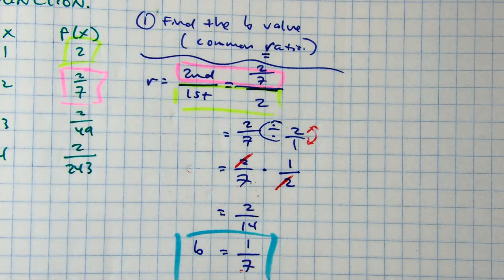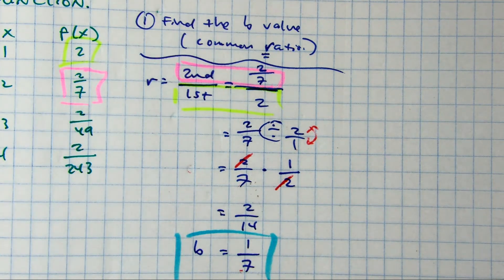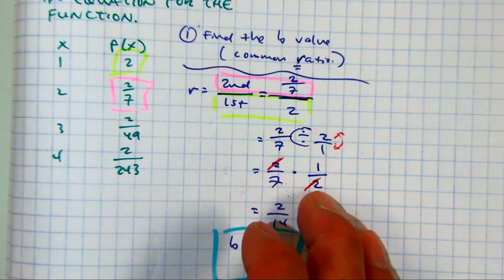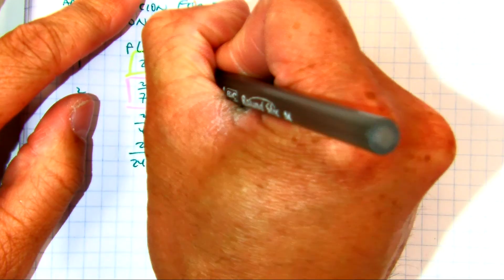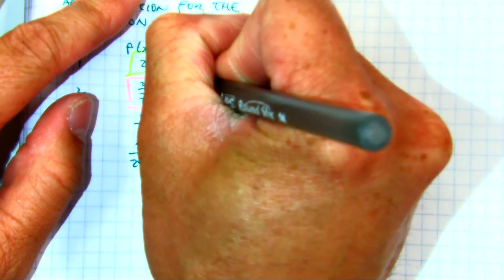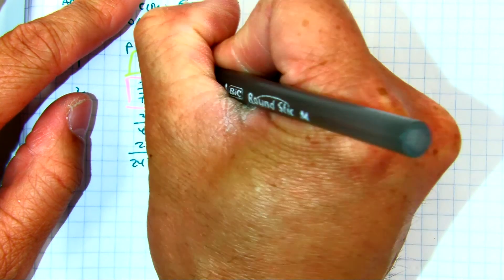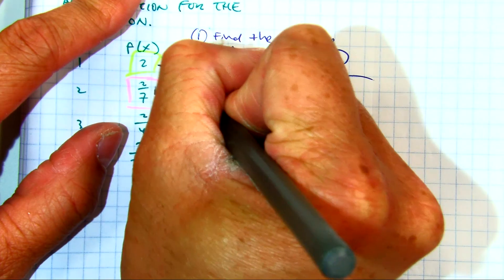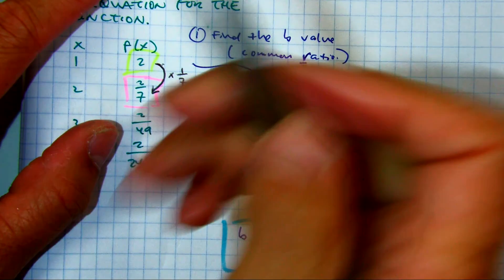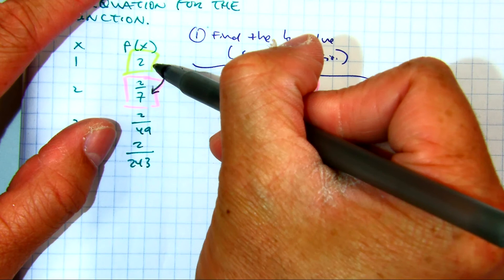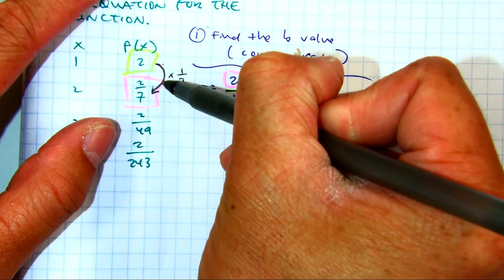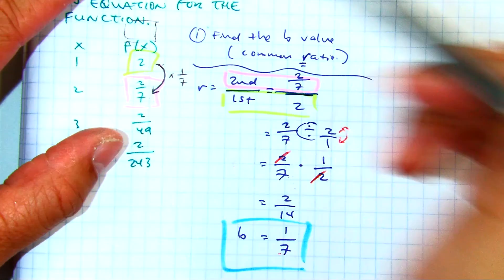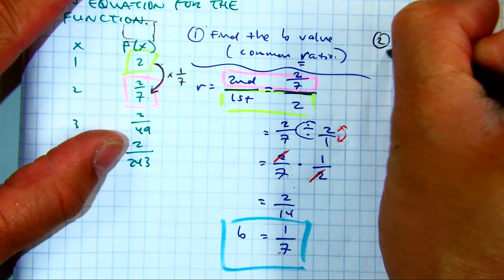All right, let's teach you something else. So that means that if I'm going from here to here, two times two sevenths, what number am I multiplying by? One seventh. Pay attention.